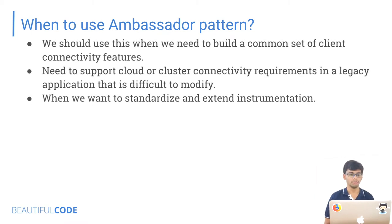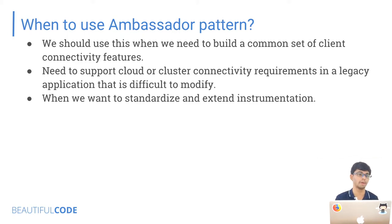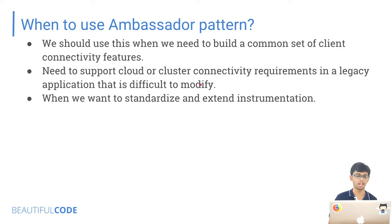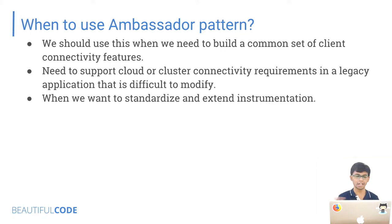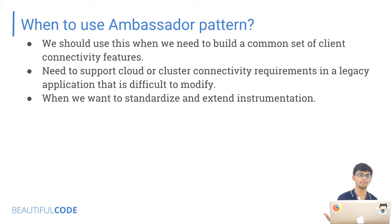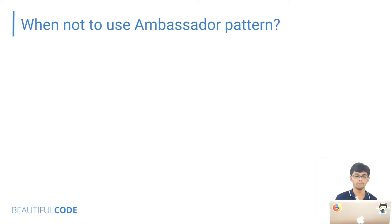When to use this pattern: when building a common set of client connectivity features — many services talking to your image store service can just deploy the image store ambassador in their pod and not care about database sharding or data location. Use it to support cluster connectivity requirements in a legacy application that is difficult to modify. When you want to standardize and extend instrumentation, your ambassador container can log all requests going through it, regardless of whether the application container is logging or not.